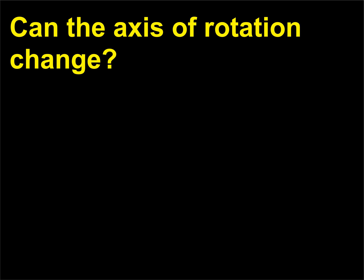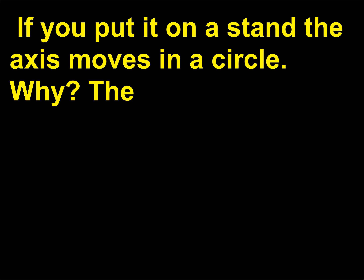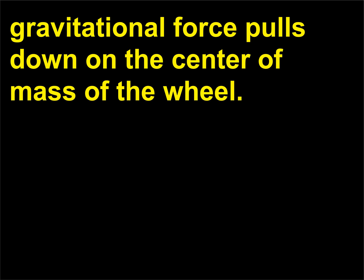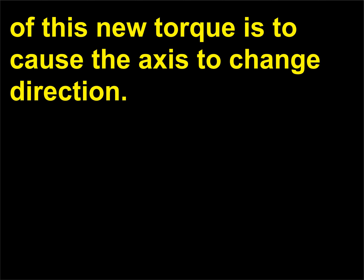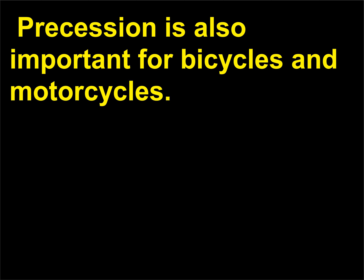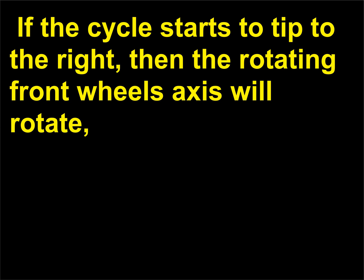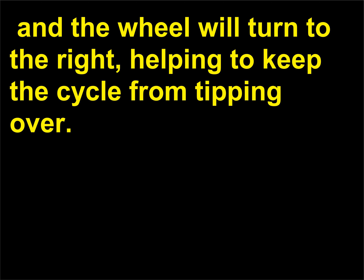Can the axis of rotation change? A toy gyroscope contains a rotating wheel. If you put it on a stand, the axis moves in a circle. The gravitational force pulls down on the center of mass of the wheel, so the gyroscope begins to rotate downward. The effect of this new torque is to cause the axis to change direction — this is called precession. Precession is also important for bicycles and motorcycles: if the cycle starts to tip to the right, then the rotating front wheel's axis will rotate, and the wheel will turn to the right, helping to keep the cycle from tipping over.